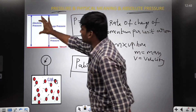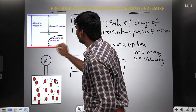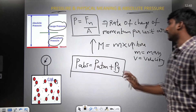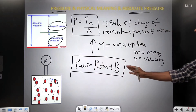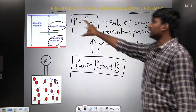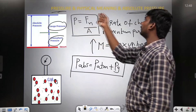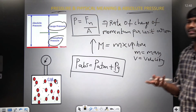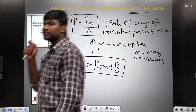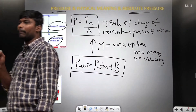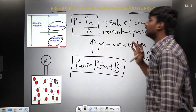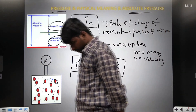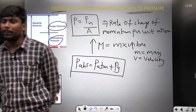Absolute pressure is equal to atmosphere pressure plus gauge pressure — that is about the absolute pressure. So when we come to the physical meaning of pressure, it is the rate of change of momentum per unit area. That is regarding the pressure, physical meaning of pressure, and absolute pressure.